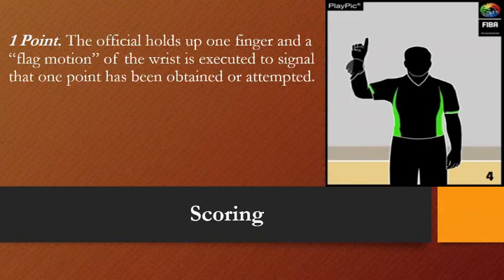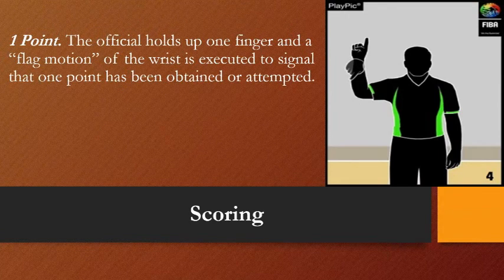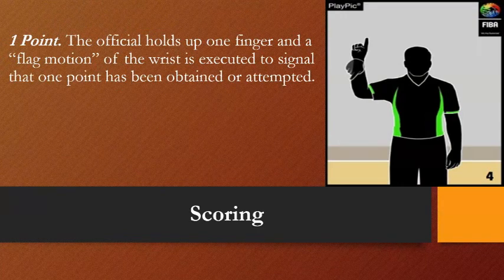Next, we have scoring. In basketball we have one point, two points, and three points. For one point, the official holds up one finger and a plug motion of the wrist is executed to signal that one point has been obtained or attempted.